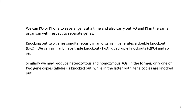We can create knockouts or knock-ins with one to several genes at a time, and can also carry out knock-out and knock-in in the same organism with respect to separate genes, or create a knock-out first and then recreate a knock-in in the same organism with respect to the same gene. Knocking out two genes simultaneously generates a double knock-out (DKO), and we can similarly have triple knockouts (TKO), quadruple knockouts, double knock-ins, triple knock-ins, and so on. These techniques are used for creating humanized organisms, which we will discuss later in this course.